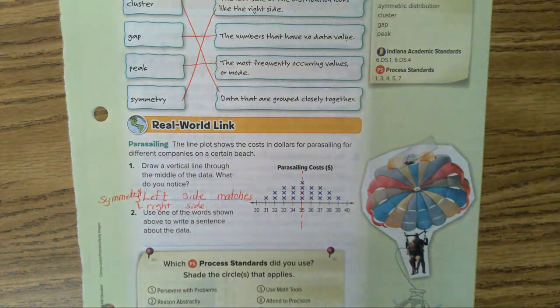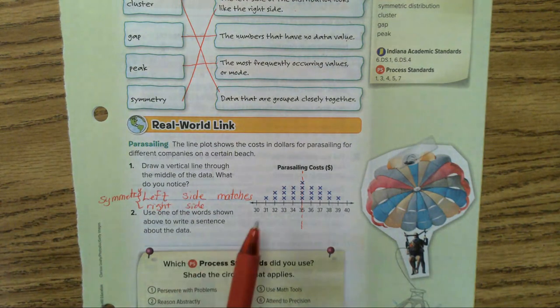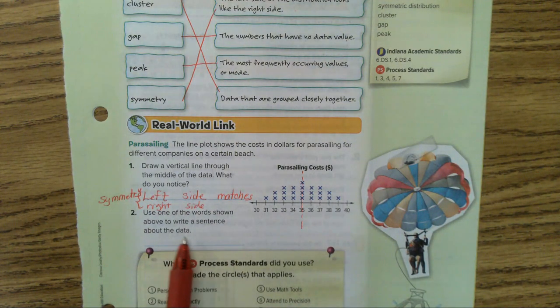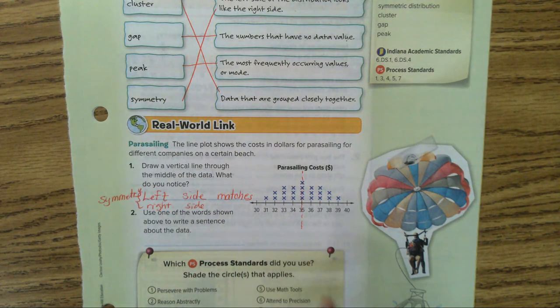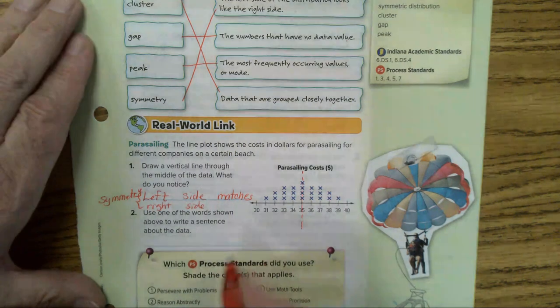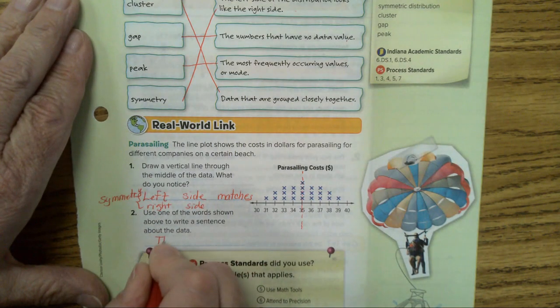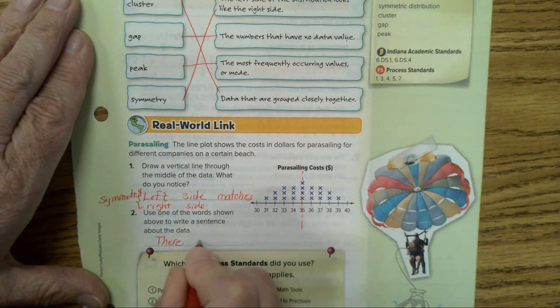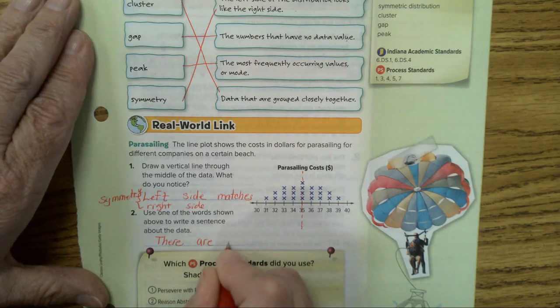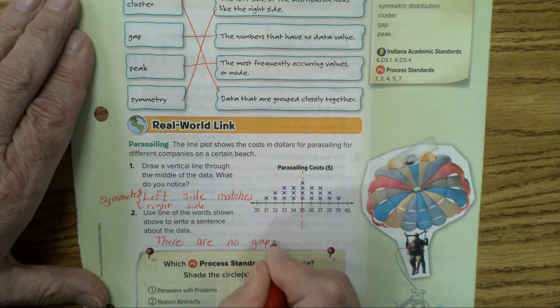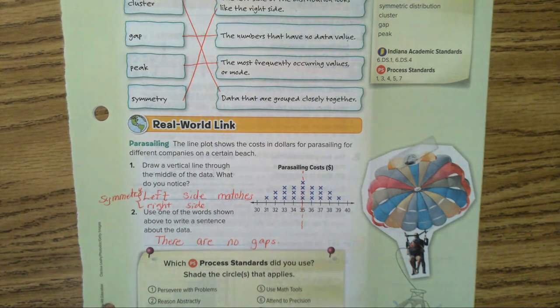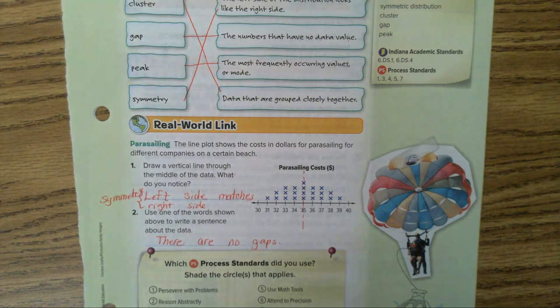Use one of the words shown above to write a sentence about the data. Well, you could say it is symmetrical. You could say there are no gaps. I'm going to say there are no gaps. Yep, there aren't, every number has something above it, doesn't it? Now, you could say other things about that to make it true. Any questions?